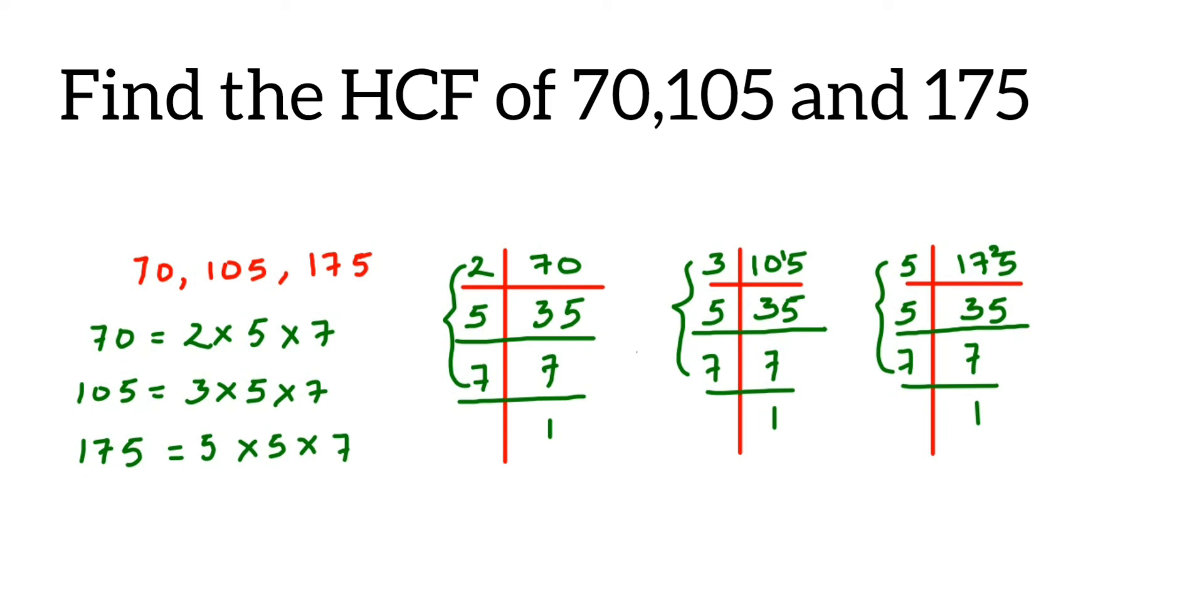Once we have done this, we have to take a common prime factor, that is a prime factor which is present in all the three numbers. Like here if you see, 5 is present in all the three. Yes, and 7 is also present in all the three.